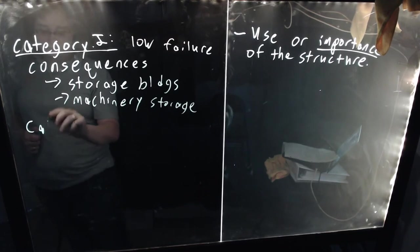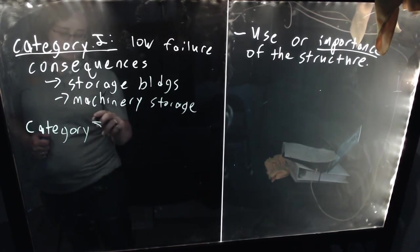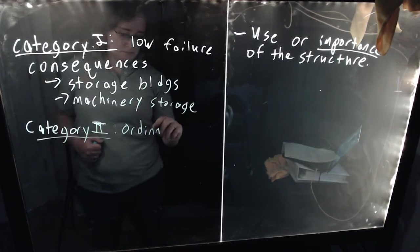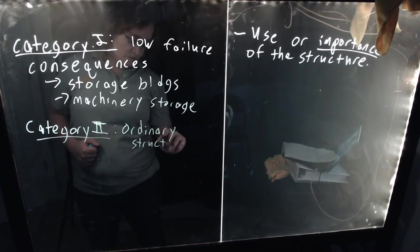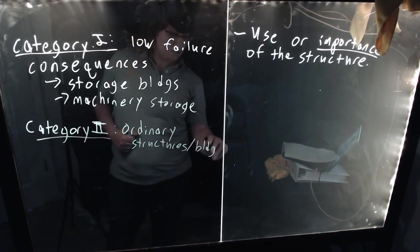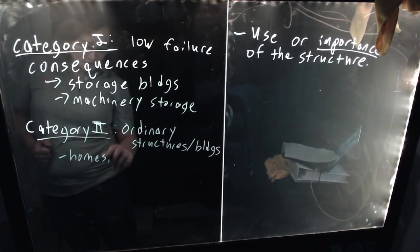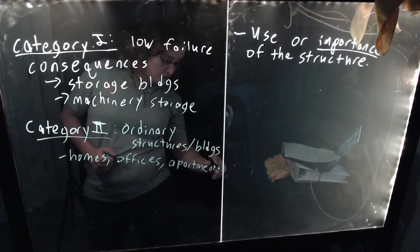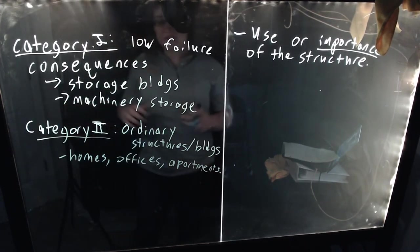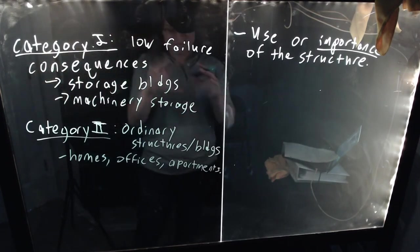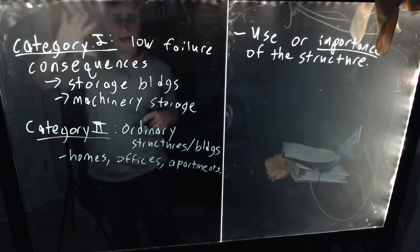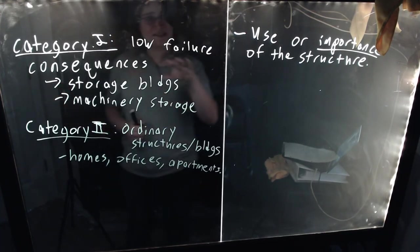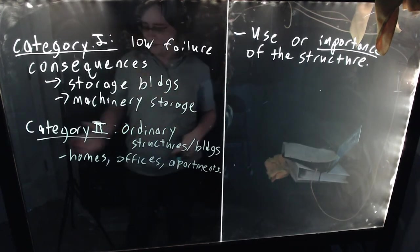Category II. These are most ordinary structures, or ordinary structures/buildings. These are your homes, offices, apartments. I haven't explained what exactly we're going to do with these importance factors, but these categories are going to then be used to determine factors that will be applied to the actual environmental loads we calculate.